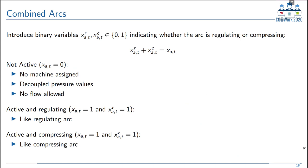The fourth and simplest artificial arc is the combined arc. For a combined arc, you can choose via two binary variables whether it should work as a compressing arc (with machine assignment) or as a regulating arc, and the modeling then follows accordingly.